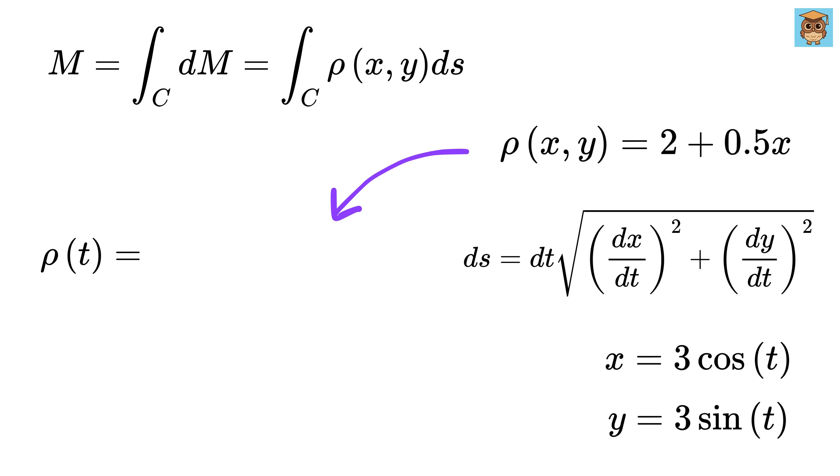Also, our density will become 2 plus 0.5 times x will become 3 cos t, or it will be 2 plus 1.5 times cos t. Also, dx over dt will be negative 3 times sine of t, and dy over dt will be 3 times cos of t.